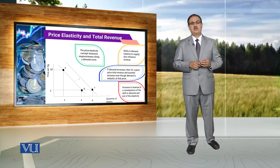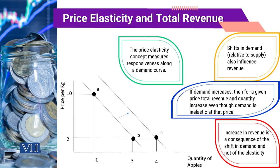Here we are in the relatively inelastic range of the demand curves. When the consumer moves from point B to point C, there is an increase in total revenue — even though there is no change in price. We had stated that if price increases then total revenue increases when demand is inelastic. But here price did not change, yet total revenue increased, and this increase in revenue is the consequence of a shift in demand, not because of a change in elasticity.